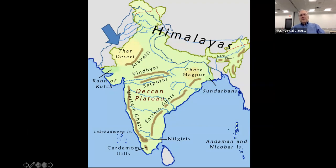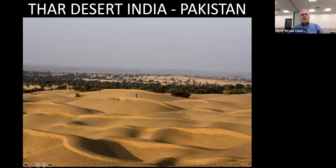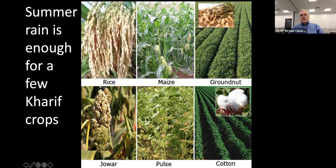The Thar Desert is over here — it's a dry area in this part of India. It is known for its kharif crops: the summer crops include rice, maize, groundnuts, jowar, pulse, and cotton. This desert is shared between Pakistan and India. Not all the area can grow these crops obviously, and so this is where some nomadic activity takes place.